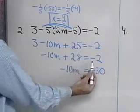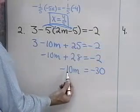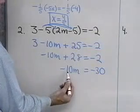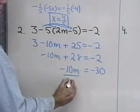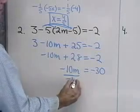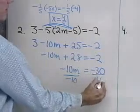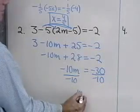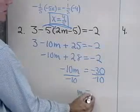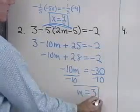When I add negative 28 to both sides, here I multiply both sides by negative 1 tenth, which is the same as dividing both sides by negative 10. When I do that, I end up with just 1m is equal to positive 3.